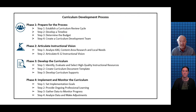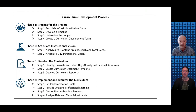The instructional vision then drives the work of phase three as the team selects a primary HQIR and develops the local curriculum anchored in that HQIR. Phase four focuses on implementing and monitoring the curriculum to make necessary adjustments in support of continuous improvement. The icon for this phase illustrates that this is a cycle that repeats each year of implementation as the district strives to get closer and closer to actualizing the instructional vision in all classrooms across the district.